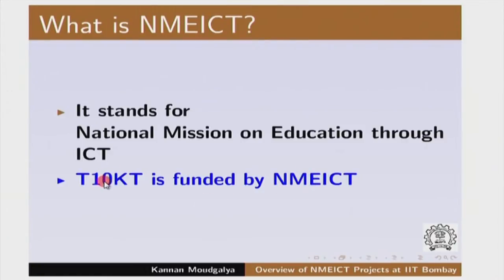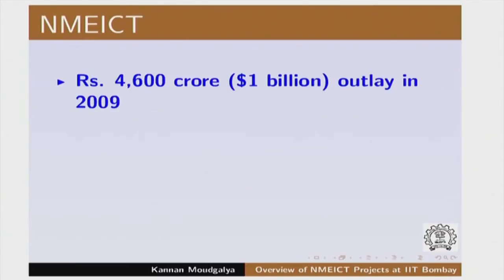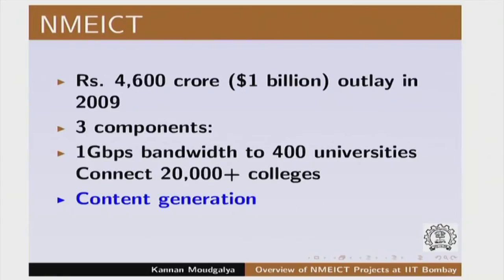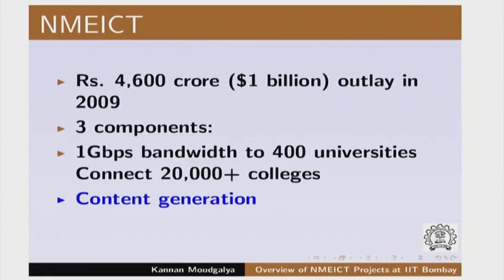That is the connection between NME-ICT and the course you have joined for. NME-ICT was a 4600 crore — a 1 billion dollar project in 2009. It has three components. The first is to give 1 Gbps of bandwidth; there were only 400 universities in 2009, now there are more than 600, and to connect 20,000 colleges with this bandwidth feed. The second major component is content generation — T10KT is also funded under this head. The third one is a low-cost access or computing device, because if you have only bandwidth and content, that is not good enough unless our children are empowered with an access device.